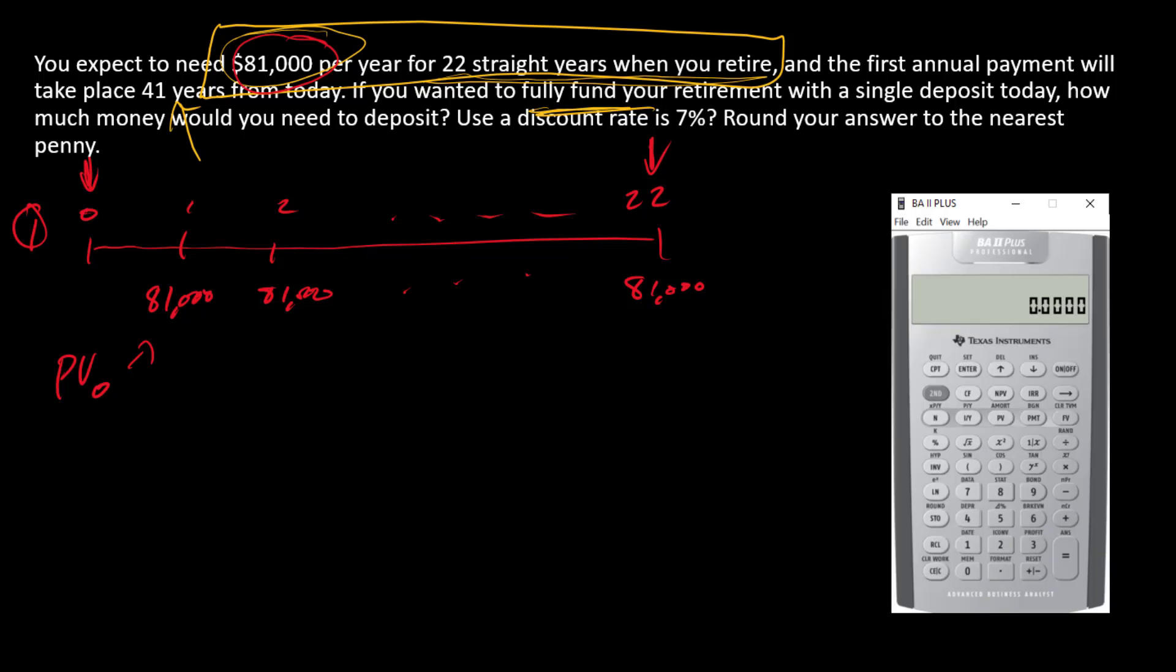I'm going to use a financial calculator. For this problem we're looking for a PV, so I'm going to enter everything else and then solve for the PV. Let's start by entering $81,000 as the payment, zero is FV because there is no time 22 cash flow aside from the payment.